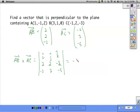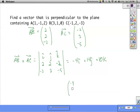You should have ended up with negative 4i plus 14j plus 10k. So, a vector that's perpendicular to the plane would be negative 4, 14, and 10.